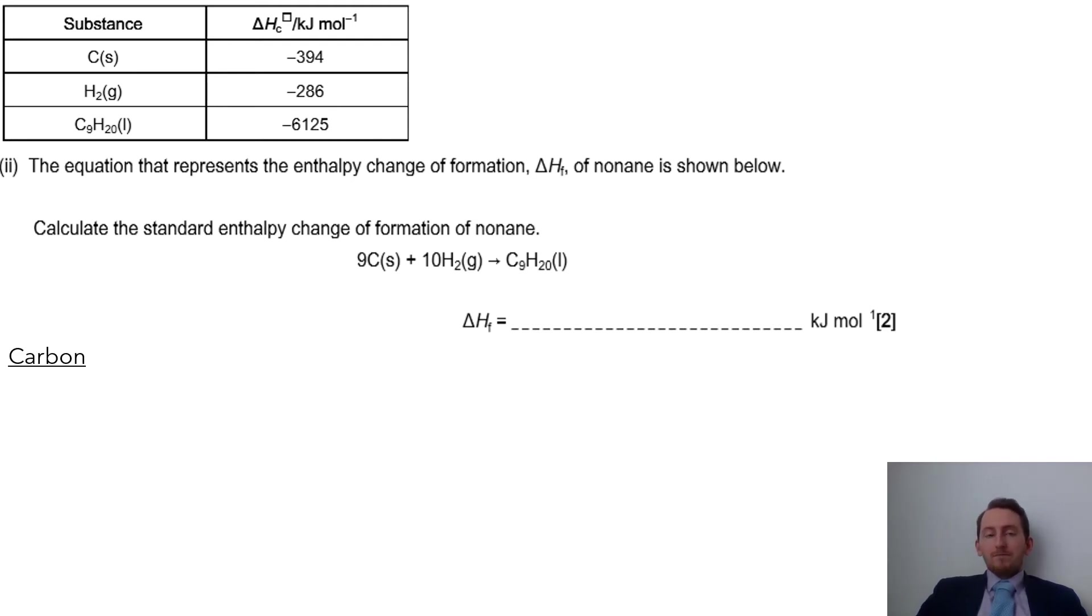So looking at carbon, I've got -394 and I've got nine lots of carbon based on my equation, so I can work that out. There's my value for carbon.